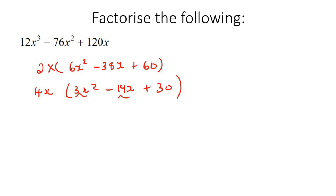Now we can't take out any number from those. Sometimes people don't know what the biggest number they can take out is. So what I tell them to do is just take out a 2, and then if you can take out more after that, you just keep adding to it. But if you want to take out a 4 from the very beginning and you saw that, then that's fine as well.